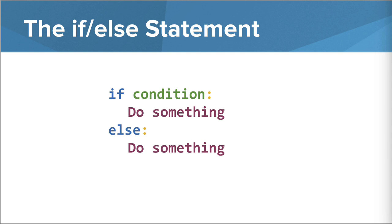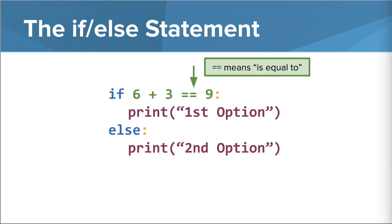Let's look at a few examples to see how this actually works. This example reads as the following: if 6 plus 3 equals 9, print first option. Otherwise, print second option. So which option will print in this case? First option, since 6 plus 3 is equal to 9. Once this happens, the program does not evaluate any of the statements that follow.